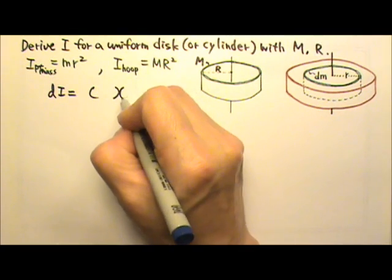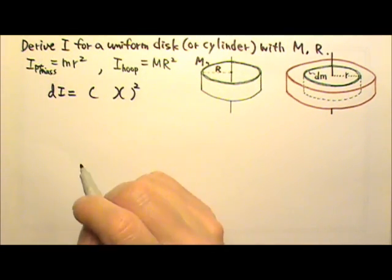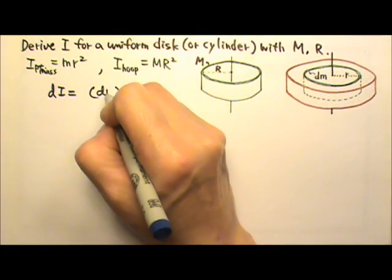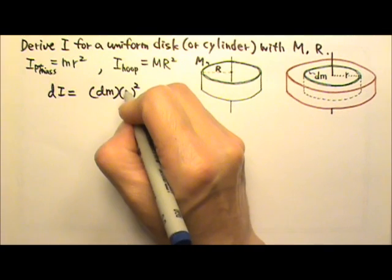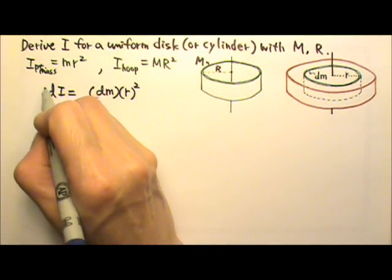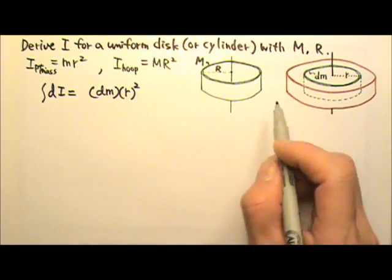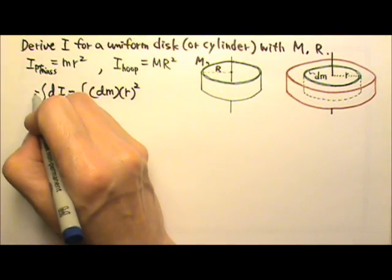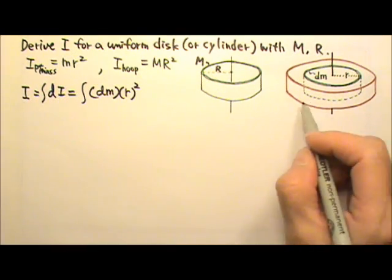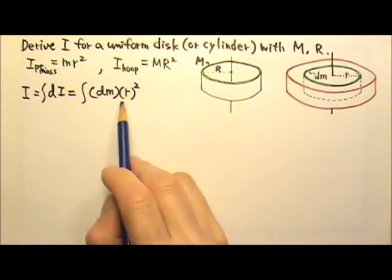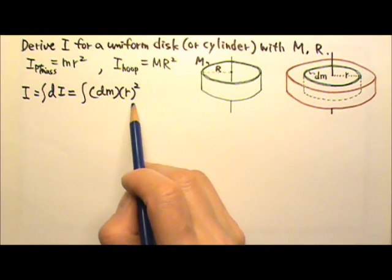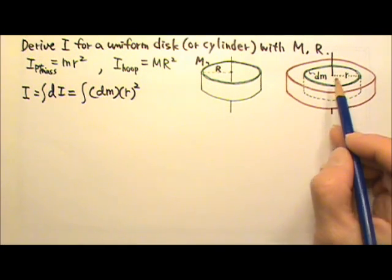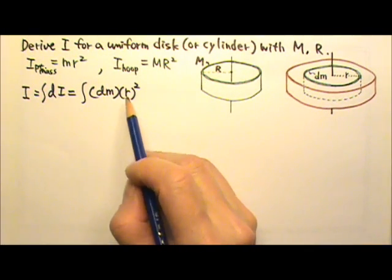The mass of this extremely thin layer of hoop is dm. The radius of the hoop is r. And if we add all of the dI's of all of the thin layers of hoops together, we get the total rotational inertia of the entire disc. In this case, the r² is not a constant, because a different dm would have a different r. So we cannot take the r² out of the integral.